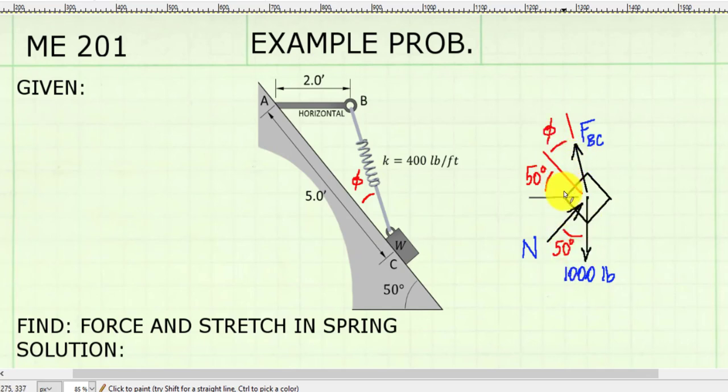Now the orientation of force BC I've shown from the horizontal, and I'm not really sure what that is. I know that we've got the inclined plane acting at 50 degrees, so I'm going to call this angle between the spring and the inclined plane angle phi, and we're going to have to find that.